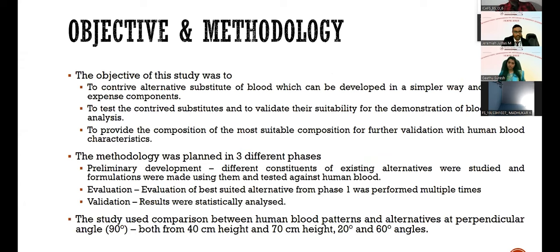The objective of the study was to contrive an alternative substitute for blood that can be developed in a simpler way with low-expense components, to test the substitute, and to validate its suitability for demonstration of blood pattern analysis, as well as to provide the composition of the most suitable formulation for further validation against human blood characteristics. The methodology was conducted in three phases: preliminary development — where different constituents of existing alternatives were studied and formulations tested against human blood; evaluation — where the best suited alternative from phase one was tested multiple times; and validation — where results were statistically analyzed.